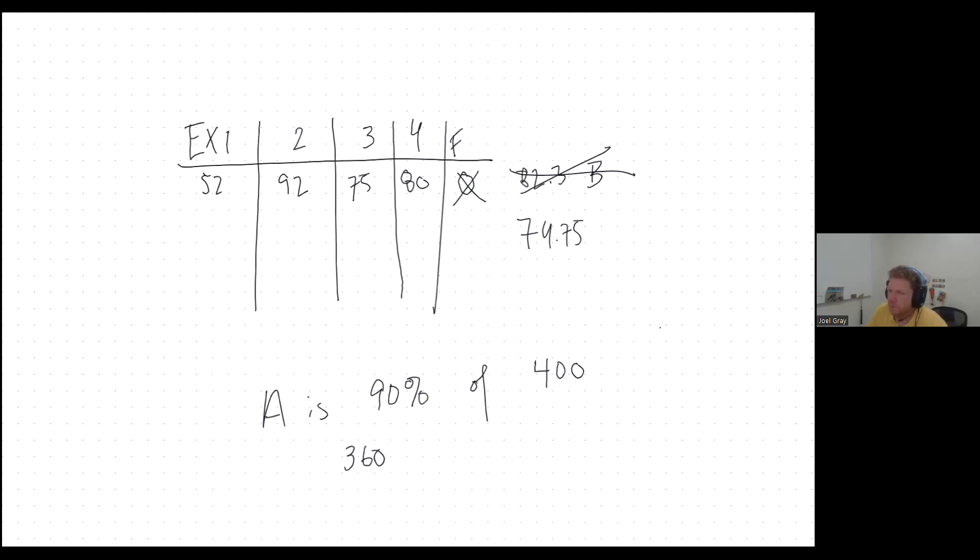So essentially, this person, if they had this grade breakdown, if they were saying, okay, I have this 82.3, I want to make a what to get me to a 90%. Well, essentially all that they would need to do is say 360 minus 92 minus 75 and minus 80. That would get them, they would have to get a 113 on the final exam. Their 52, their lowest exam grade would be dropped. They'd be in good position to do that.